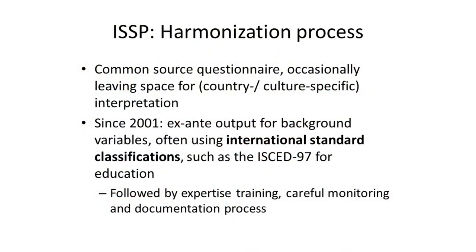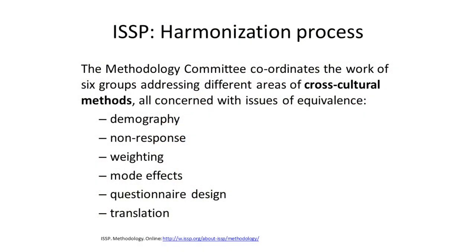Another example of a large international survey is the ISSP. The International Social Survey Program has a common source questionnaire, and they occasionally leave space for country or culture-specific interpretations to allow some flexibility. Since 2001, the ISSP has been using ex-ante output for background variables. They often use the international standard classifications, such as the ISCAD 97 for education measures, which we are going to be talking about in a future video. In addition, they provide expertise training, careful monitoring, and a very detailed documentation process all along their survey collection, so they are completely transparent. Finally, the ISSP has what they call the Methodology Committee, which coordinates the work of six different groups that each address different areas of cross-cultural methods, all concerned about the idea of measures being equivalent. Those six groups are demography, non-response, weighting, mode effects, questionnaire design, and translation.